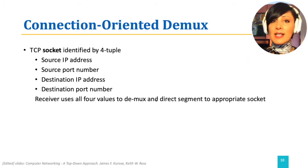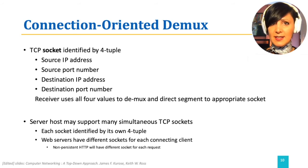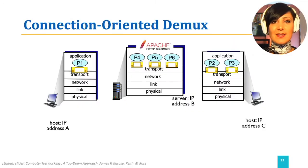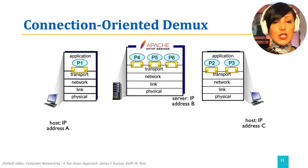A host — especially a server, for example a web server — might have many simultaneous TCP sockets. Identifying the sockets for those different connections, which might be for the same application, needs source information as well. Host B is running a server application like a web server. The server on host B has the known port for the server, which is port 80, tied with different sockets to different parallel processes running the same application.